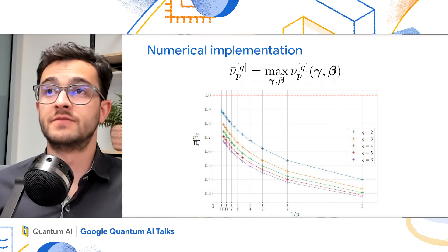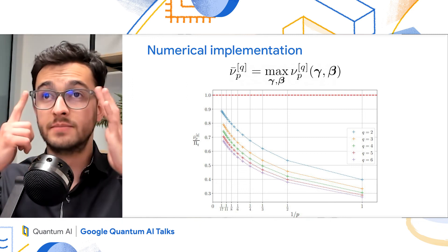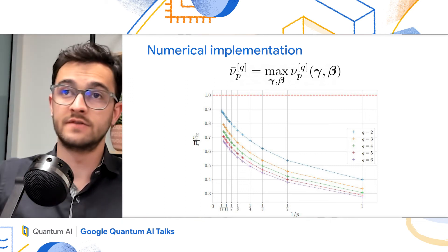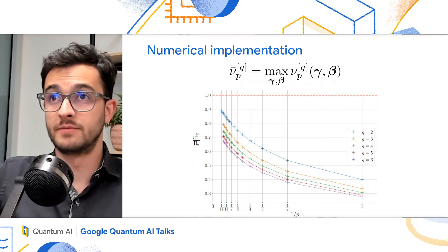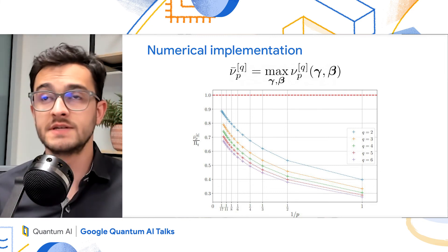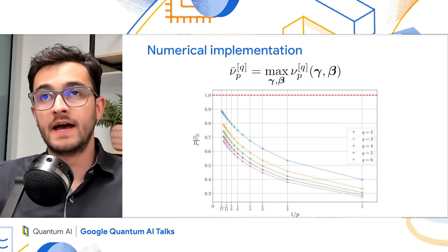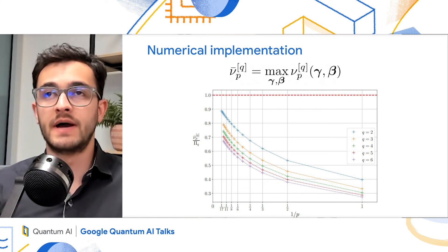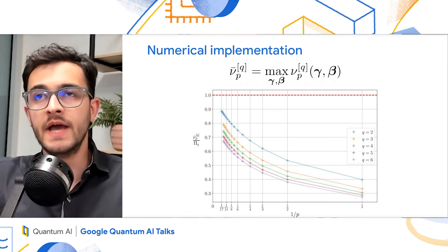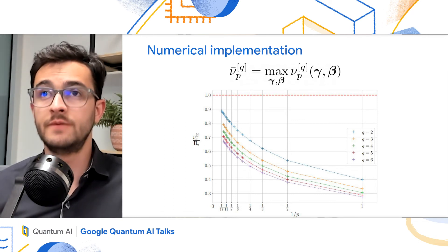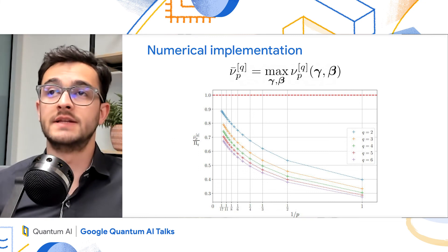So we implemented this iteration for different q. So the blue curve is the curve that you've seen for MaxCut. And then we plot from q equals 2 to q equals 6. And in this plot, everything is rescaled by the generalized Parisi values. For every q, there's a different Parisi value. And here everything is rescaled by the Parisi value. So the goal is to get to the red line at 1.